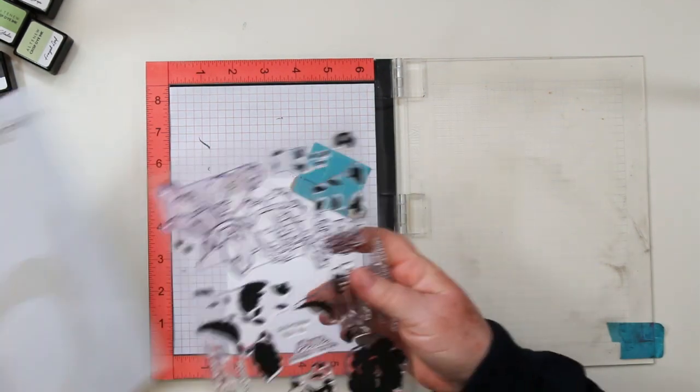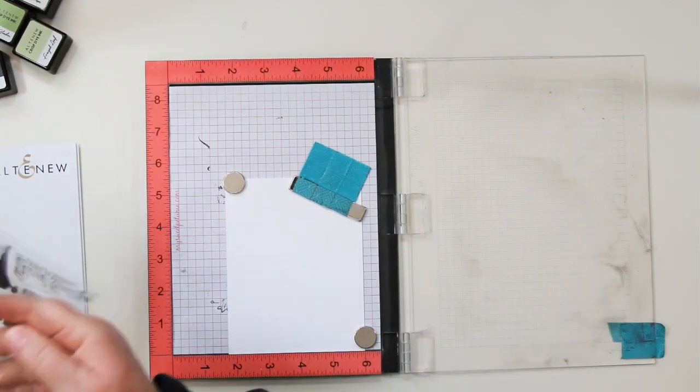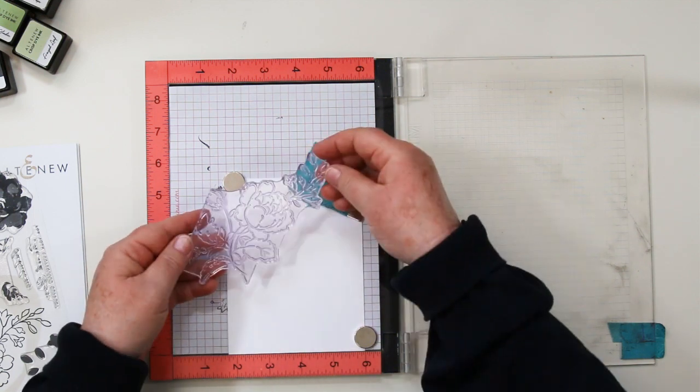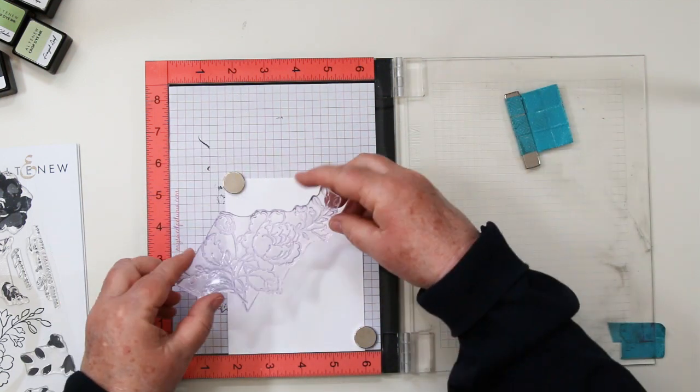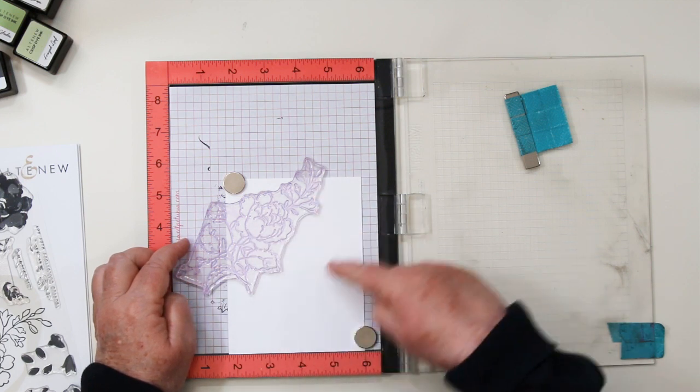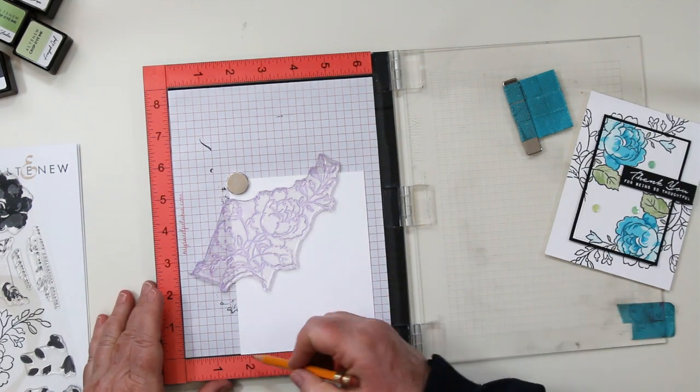You're actually going to need two pieces for the spotlight technique, so I've got two pieces of Hammermill and they are 4 and a quarter by 5 and a half inches each. You see that I have it in the Misti and I have it lined up in the bottom right-hand corner with the six, and I'm going to be using that mark all the way through this.